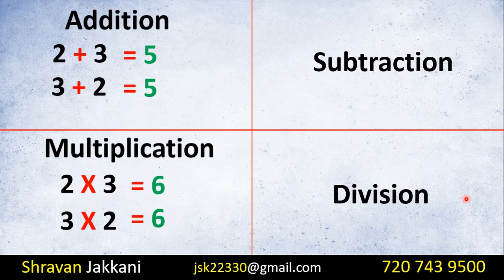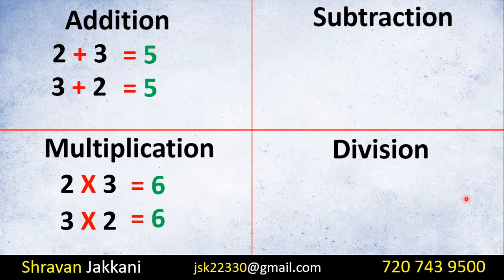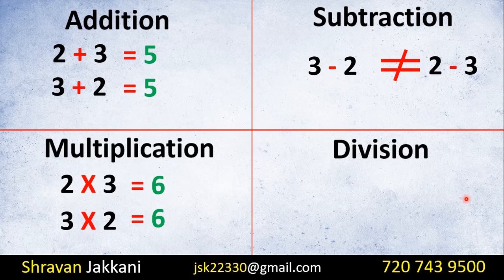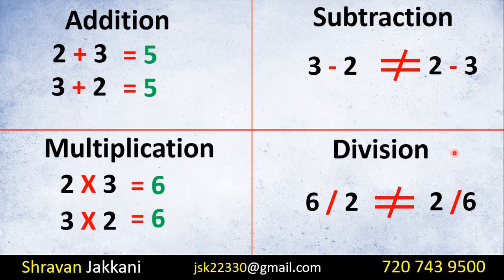However, we can't apply this to subtraction and division. For subtraction and division, changing the order changes the answer. For example, 2 divided by 6 is not the same as 6 divided by 2. So the commutative property applies only to addition and multiplication.